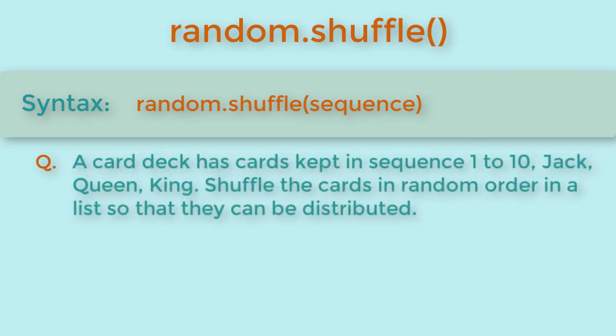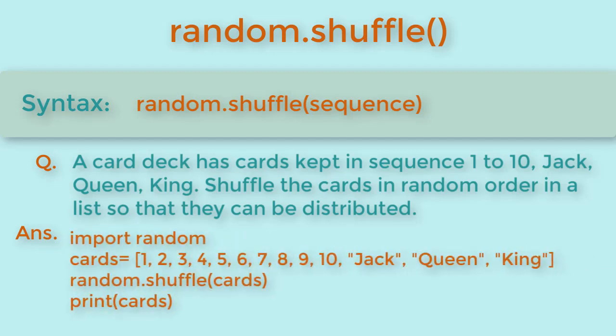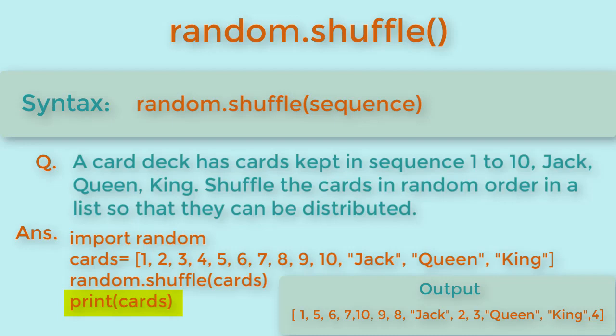The question that can be asked over here is to simulate a card deck. A card deck has cards kept in sequence 1 to 10, Jack, Queen, King. Shuffle the cards in random order in a list so that they can be distributed. Here we will first import the library and then create a list with cards listed in given sequence. Then you will call the shuffle function with the list. Then you will print the result which will give the cards in random order.